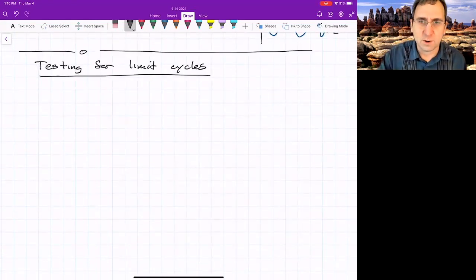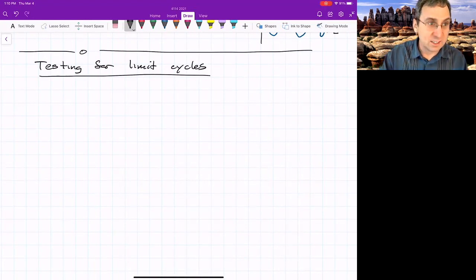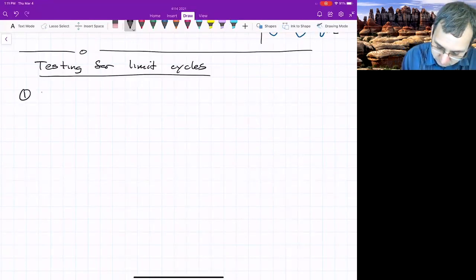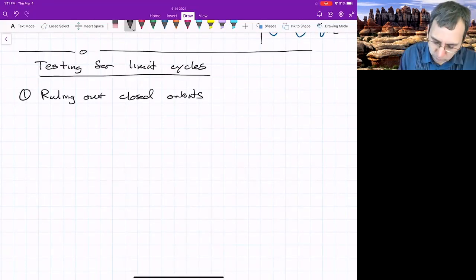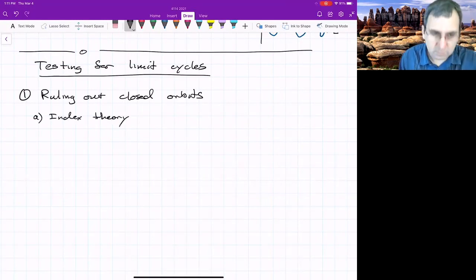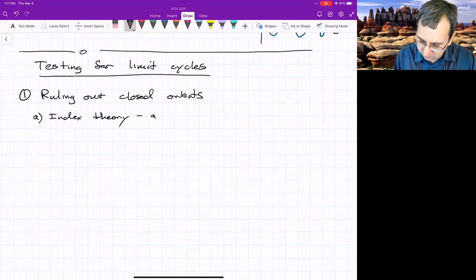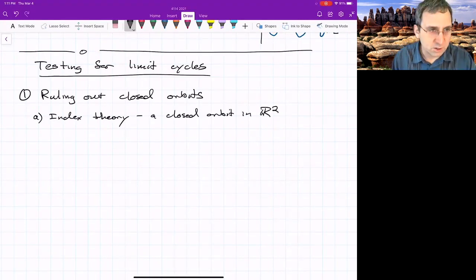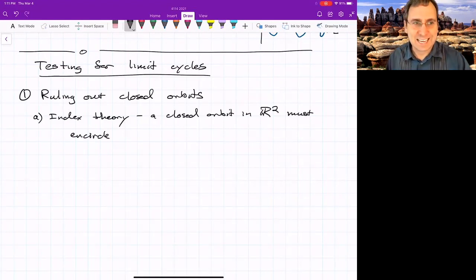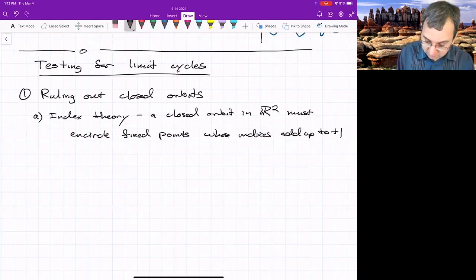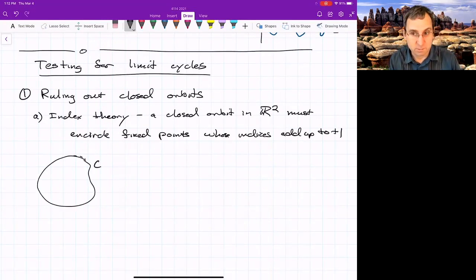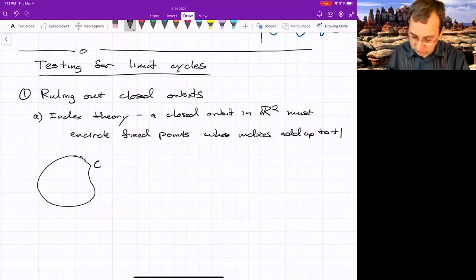So one way to test for limit cycles is you could use index theory. A limit cycle is just one type of closed orbit, so we could try to rule out closed orbits. If we have a closed orbit in the real plane R2, it must encircle fixed points whose indices add up to plus one. So if you have a region of phase space, you come up with a closed contour, and there either are no fixed points in there or the fixed points have indices that don't add up to plus one, then there's no periodic orbit that's possible.